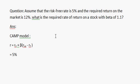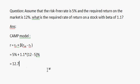So r equals 5% plus beta, that is 1.1, into (12 minus 5)%, which equals 12.7%. That's all — that is the answer.